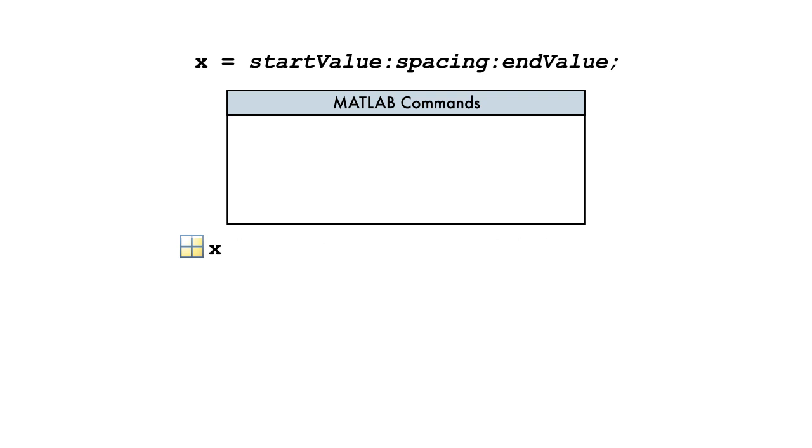But what if we chose a different spacing, like 0.15? Would the vector still end at 2? This would require the wrong spacing for the final value. So what happens? In this case, the vector ends with the value 1.9.